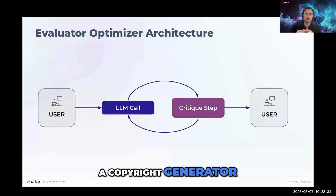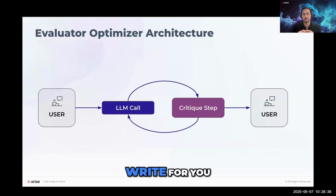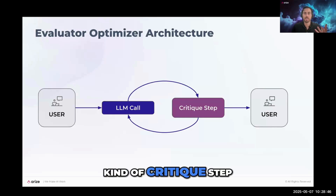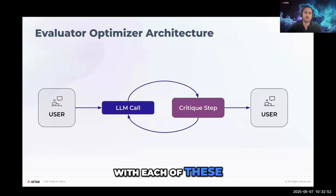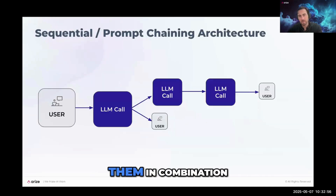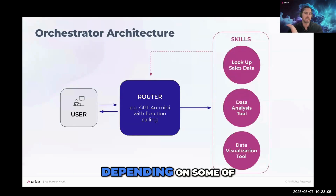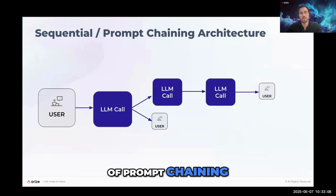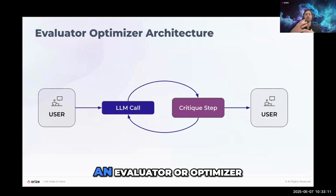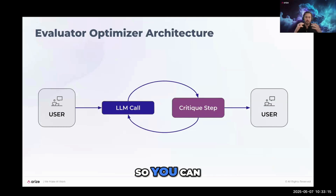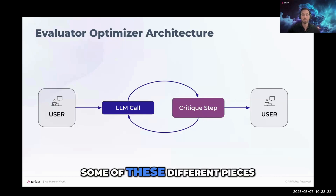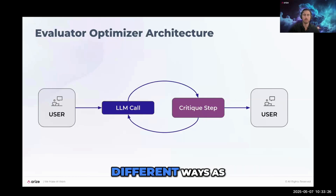You might also use a critique step in a copywriting agent to evaluate writing quality before delivery. Finally, all of these architectures can be combined. An orchestrator might use prompt chaining on certain paths, or you might apply an evaluator optimizer to a specific skill. These are the high-level architecture concepts to be aware of, and you can compose them together in different ways as needed.